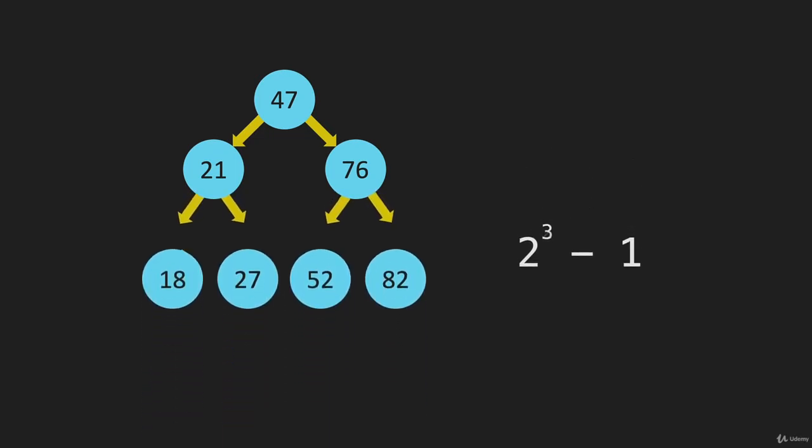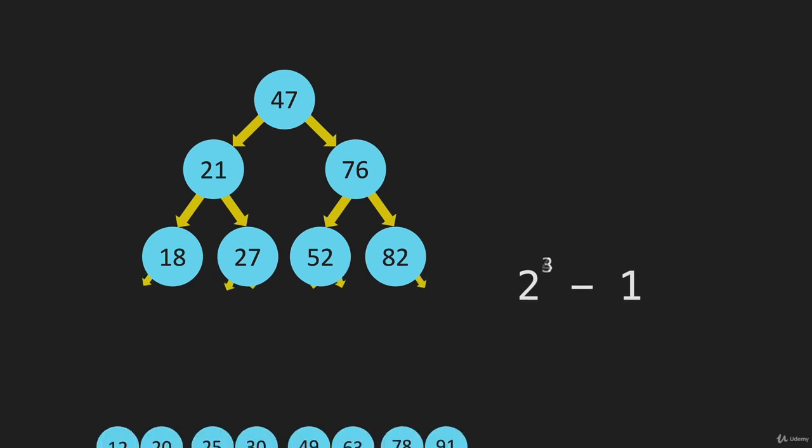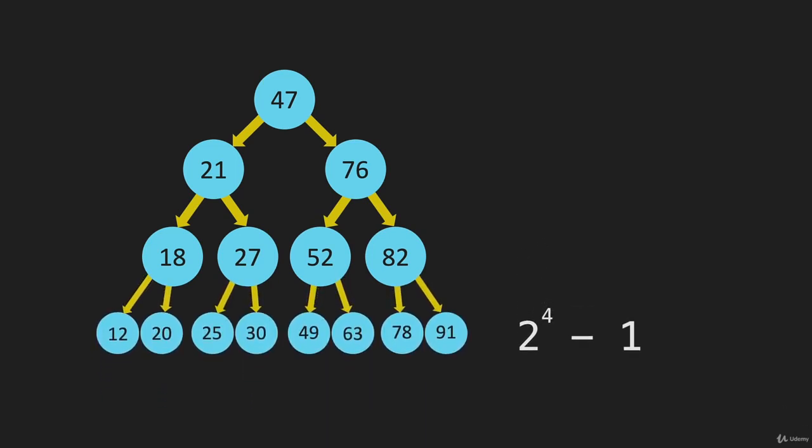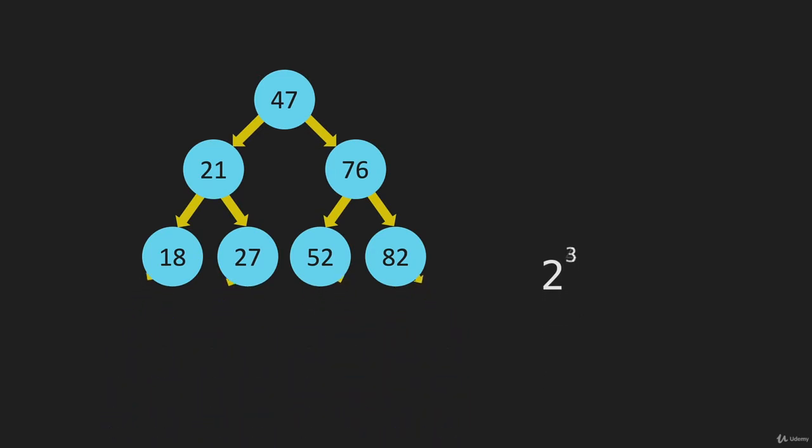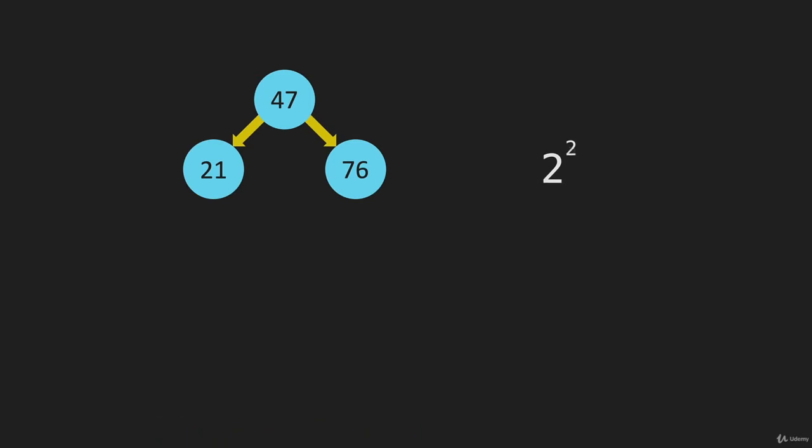Because when we build this out to another level, this is 2 to the 2 nodes, minus 1. So 4 minus 1 is 3. We have 3 nodes there. This is 2 to the 3. This is 2 to the 4. Now you can see as this grows, and it becomes 2 to the 10, 2 to the 20, the minus 1 is irrelevant. So I'm just going to remove this, and we'll say this is approximately 2 to the 4 nodes, and 2 to the 3, and 2 to the 2, and 2 to the 1.